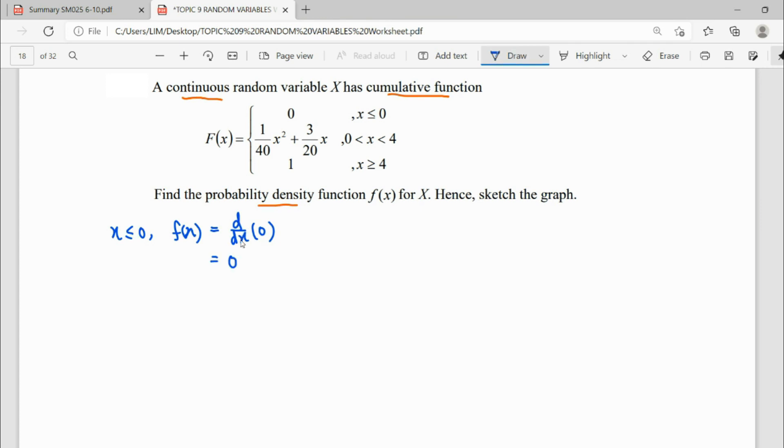When we differentiate a number, it gives us zero. Then we proceed to the next interval. To find f(x), we're going to differentiate the function that we have here. So power down, power minus one. Differentiate the coefficient x. Here we get numbers only 3 over 20.